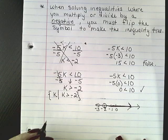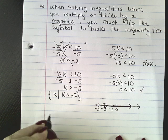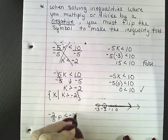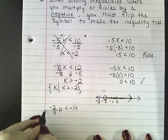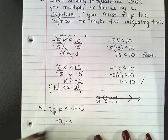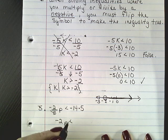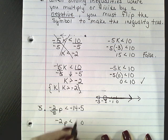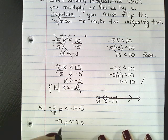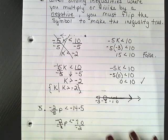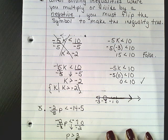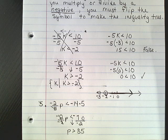Let's do one with multiplication. We have negative 2 over 5 times p is less than negative 14. First, multiply both sides by 5 to eliminate the denominator, giving negative 2p is less than negative 70. Now dividing by negative 2 — remember, you've got to flip — so p is greater than positive 35.